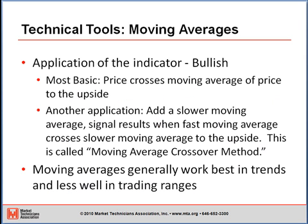The basic bullish way to use a moving average is simply when price crosses above the moving average to the upside, and the bull move is over when price crosses back below the moving average. Another application, which is a little more sophisticated but more useful, is to use two moving averages. You take a slower moving average, and the bullish signal results when the fast moving average crosses above the slower moving average. That signal ends when the fast moving average crosses back below the slower moving average. This is called the moving average crossover method.